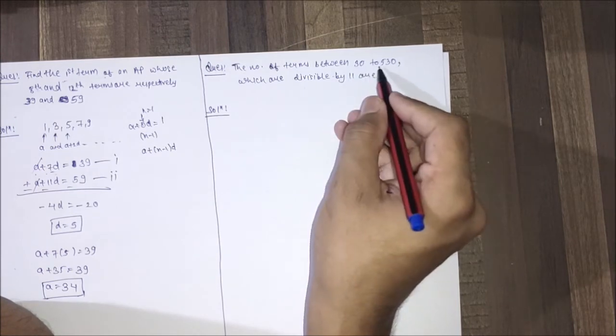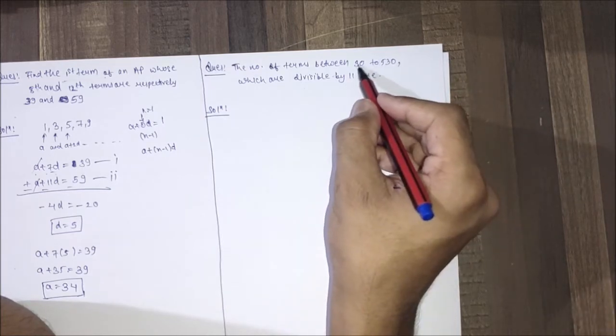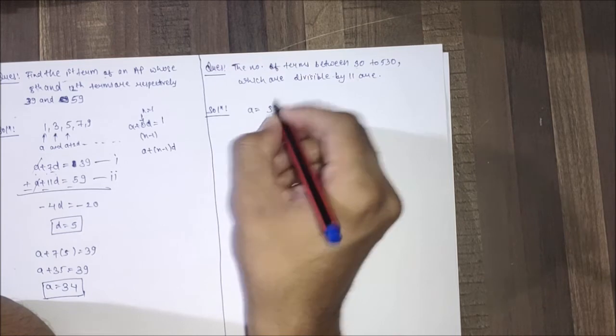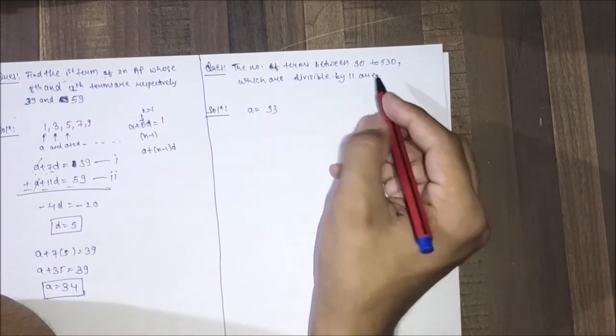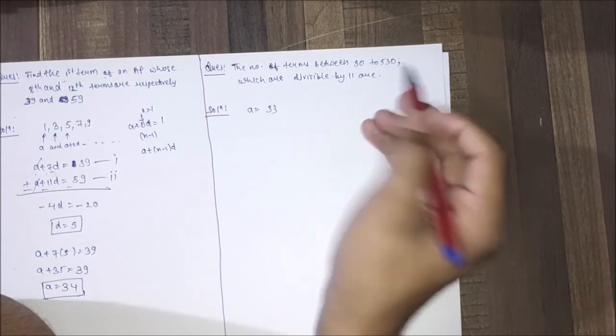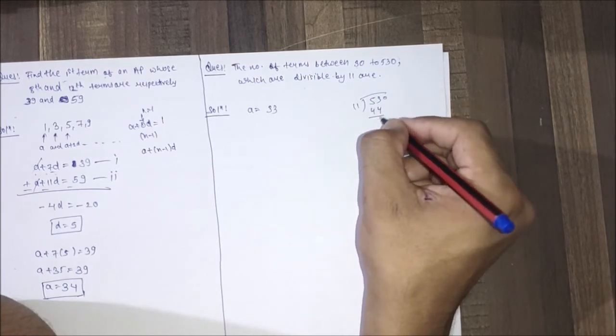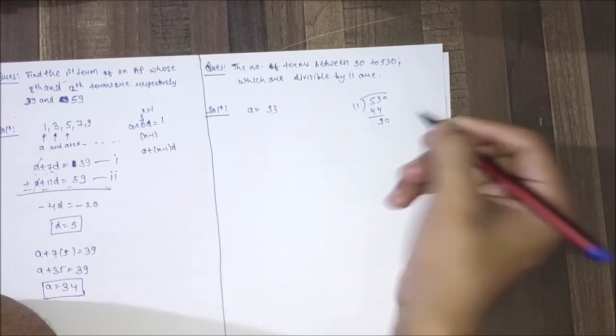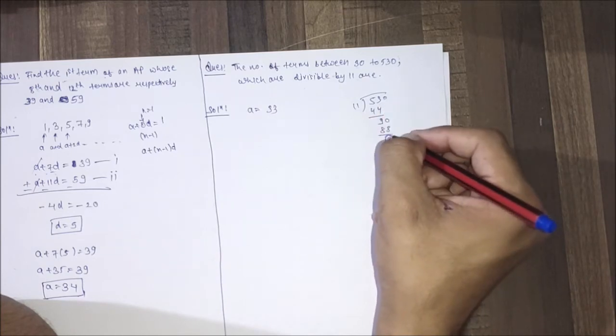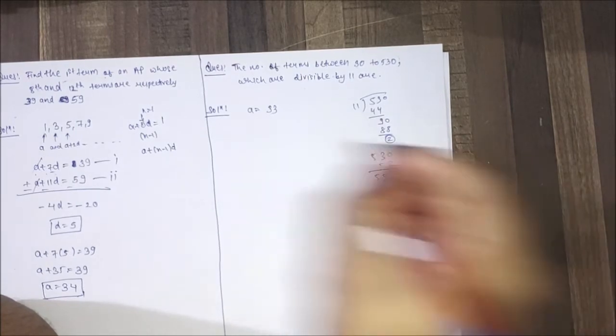Here we are given that the terms included are divisible by 11. So the term after 30 which is divisible by 11 is 33. And the last term which is divisible by 11 and less than 530 - let's check if 530 is divisible by 11. It's not divisible, we get a difference of 2. So we reduce 2 from 530, which gives us 528. So the last term is 528.